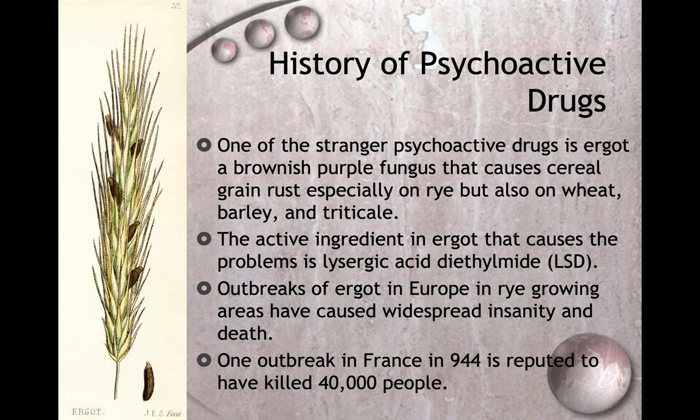One of the stranger psychoactive drugs is ergot, a brownish-purple fungus that causes cereal grain rust, especially on rye but also on wheat, barley, and triticale. The active ingredient in ergot that causes the problem is lysergic acid diethylamide, also known as LSD. Outbreaks of ergot in Europe in rye-growing areas have caused widespread insanity and death. One outbreak in France in 944 AD is reputed to have killed 40,000 people.